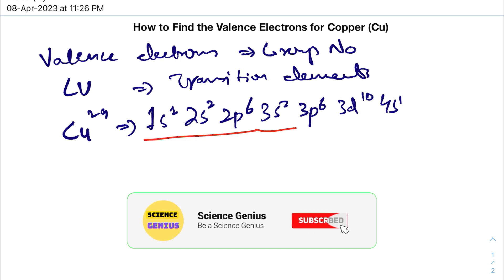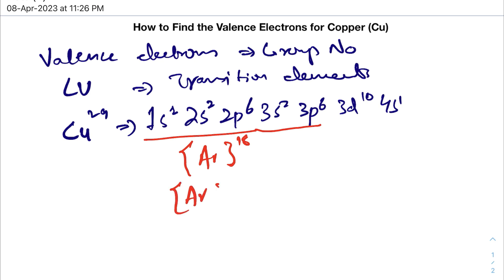Till this we are going to form it like argon 18, so we are going to write it down argon 18 for 3d10 and 4s1. So that's how we are going to write down the electronic configuration of copper.